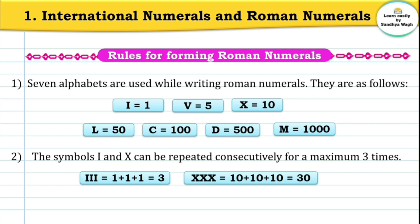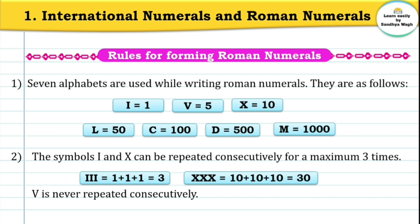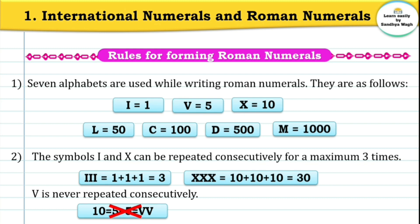Similarly, symbol X can also be used a maximum of 3 times. X means 10, so 3 times X means 10 plus 10 plus 10 equals 30. One important point: symbol V is never repeated consecutively. For example, if we want to write 10, we cannot write V twice, because 5 plus 5 equals 10 but VV is wrong. For number 10, we already have the symbol X.